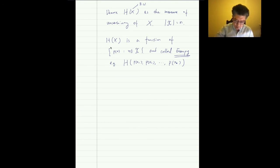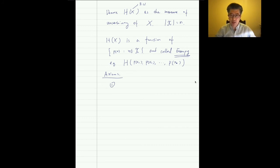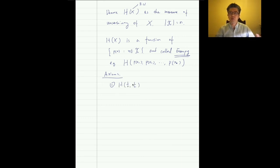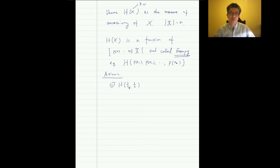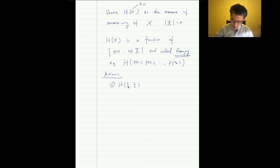The first axiom is a normalization: H(1/2, 1/2) = 1. This is like the unbiased coin example — heads has probability 1/2 and tails has probability 1/2. We agree this equals 1. You can understand this as 1 bit — to represent the outcome of a fair coin we need one bit: 0 or 1.